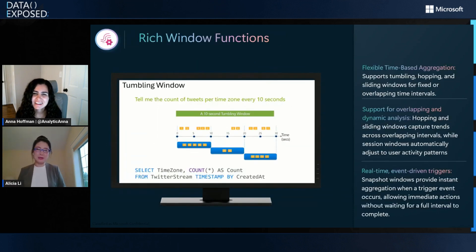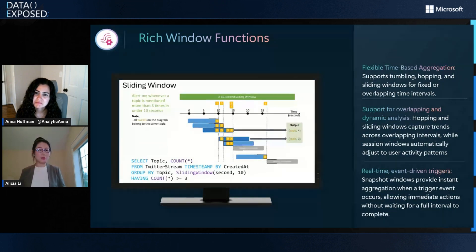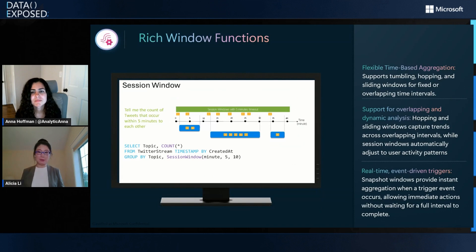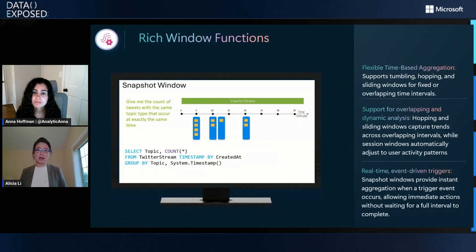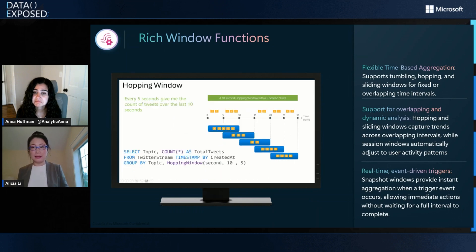What's the difference from normal SQL? The windowing function is a unique addition compared to normal SQL. We will provide tumbling window, hopping window, sliding window, session window, and more — all introduced for specific scenarios. For example, with a tumbling window you can ask: how many tweets were published in the past 10 seconds? With a sliding window, you can say: alert me if a topic gets mentioned three times in the past 15 seconds. These constructs help you check trends, detect anomalies, or respond to events as they occur, all in SQL.